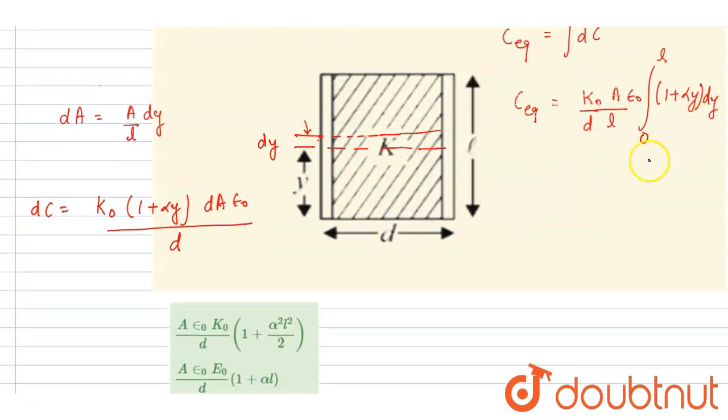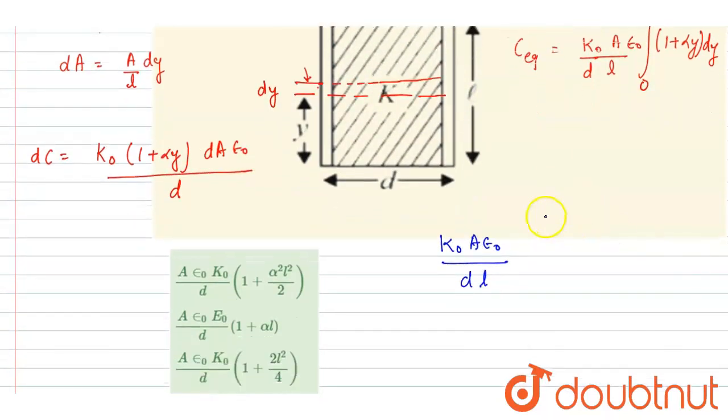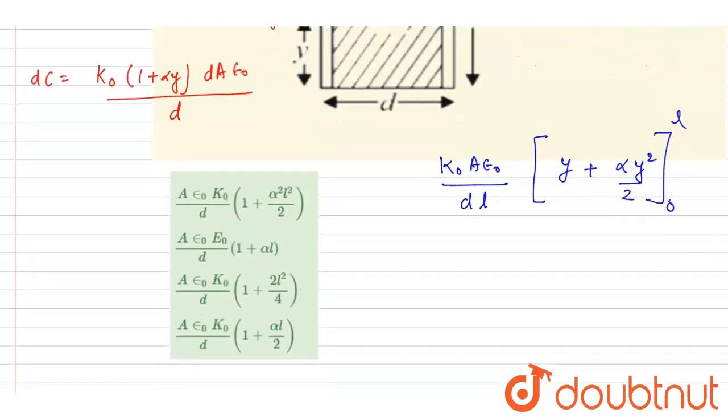So if you integrate this, as I told you, all of these are constant: Aε₀/dl. And if you integrate, you will write it is y plus αy²/2 from 0 to l. So at 0 it will be 0, so just put the value of l.